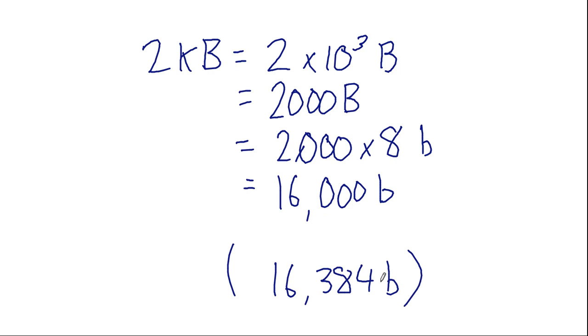So, again, if we are approximating the prefix of the decimal, 10 to the power of 3, or the binary, 2 to the power of 10, it makes very little difference. But if you want to be precise, make sure you know what prefix is being used. And for the courses I teach, we will assume the decimal prefixes of 10 to the power of 3, 10 to the power of 6, and so on.